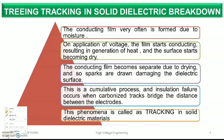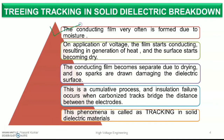The conduction film very often is formed due to moisture. If moisture is present, a conducting path develops. On application of voltage, the film starts conducting and results in generation of heat, and the surface starts to become dry. If any solid dielectric material has moisture, when we apply high voltage, due to the weaker dielectric strength, a smudged conducting path forms on the surface — and this is a cumulative process.